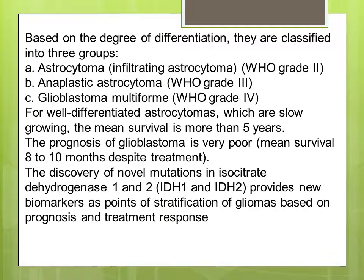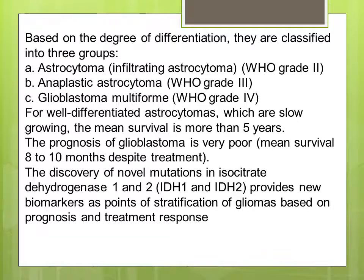The prognosis of glioblastoma is very poor — the mean survival is 8 to 10 months despite treatment. The discovery of novel mutations of isocitrate dehydrogenase 1 and 2 (IDH1/IDH2) provided a new biomarker for the stratification of gliomas based on prognosis and treatment response.